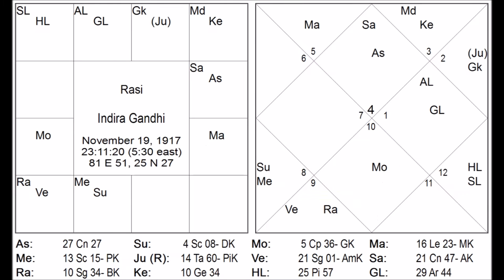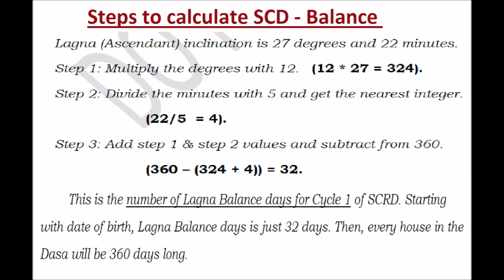Let's take the birth chart of Indira Gandhi. The ascendant is 27 degrees and 27 minutes in Cancer. Using some other software, I got it as 22 minutes. So let's consider it as 27 degrees 22 minutes as the Lagna ascendant.